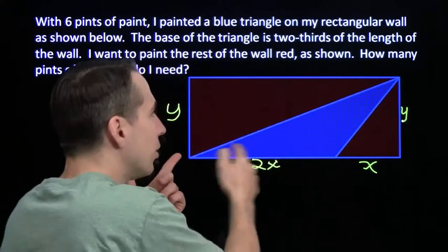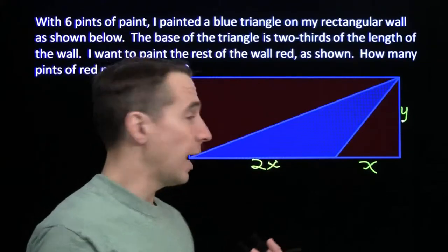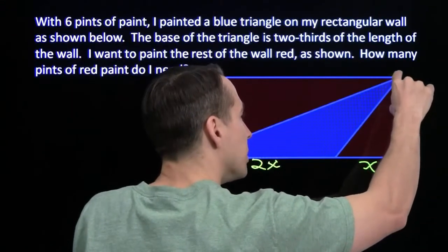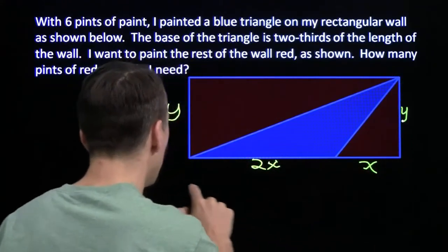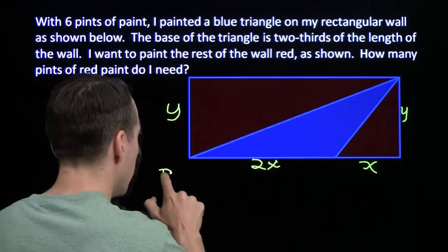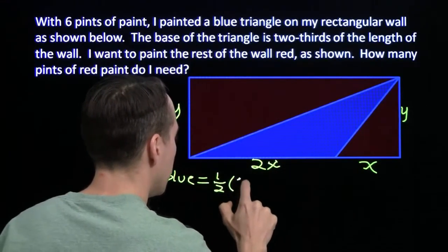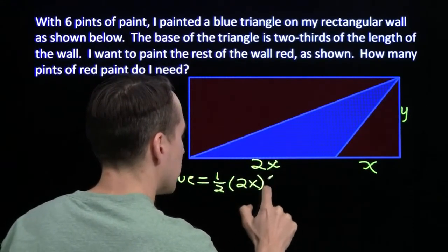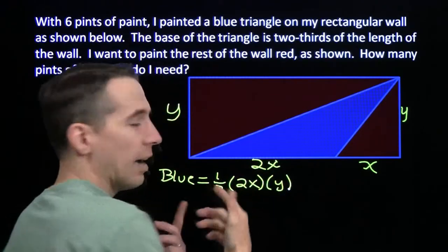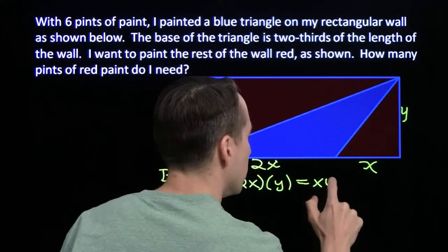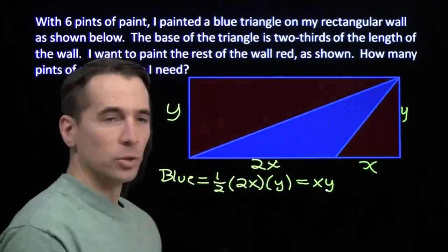So now we can find the area of the blue triangle in terms of x and y. Base here is 2x. The height from this vertex, the altitude there, is y. So we know that the area of the blue triangle is one-half of 2x times y. The one-half cancels with the 2, of course. And the area of the blue region is just xy.